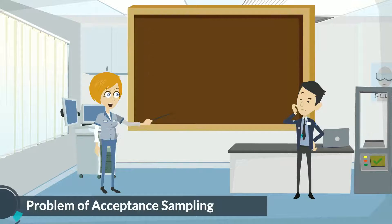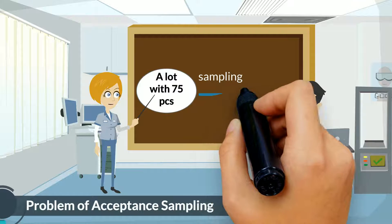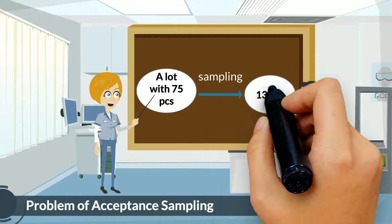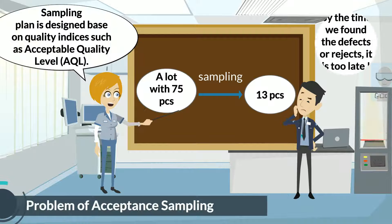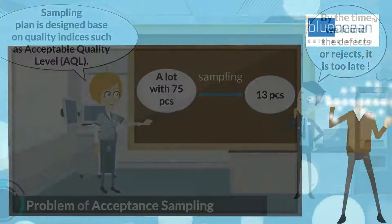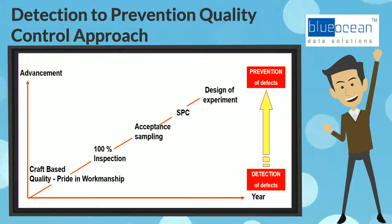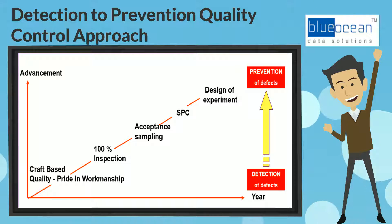Acceptance sampling is a process of evaluating a portion of the product in a lot for the purpose of accepting or rejecting the entire lot — it is a detection method. In order to compete and survive in today's marketplace, manufacturing companies shall change their quality control approach from detection to prevention.